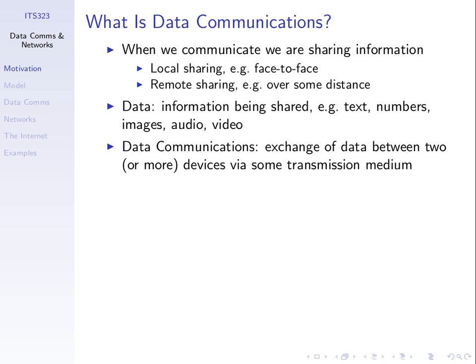Data communications is the exchange of data between two or more devices via some transmission medium. In most examples we'll use two devices — from my laptop to the access point, from one device to another. But in general we can send information to more than one other device, to multiple devices. Although we use examples of usually between two devices, in general it can be between multiple devices.